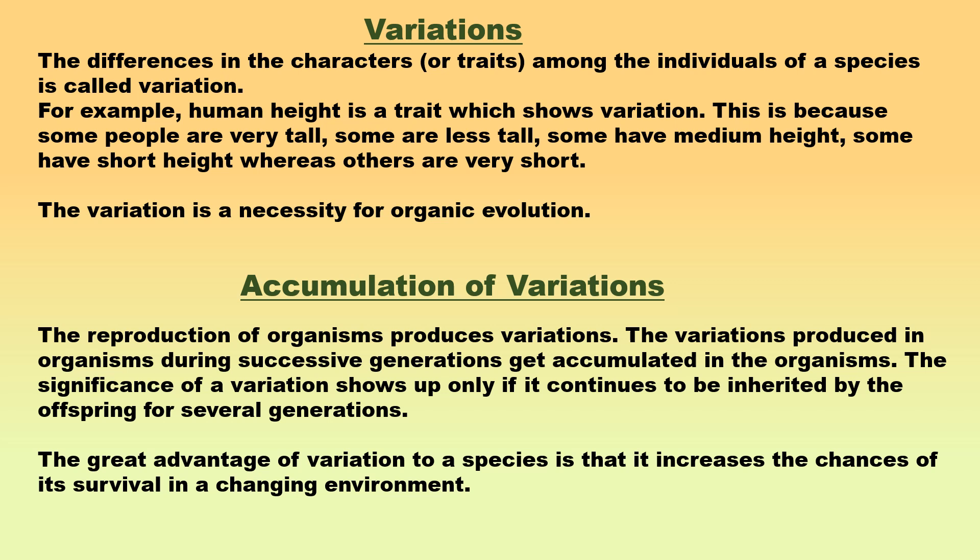Accumulation of variations: The reproduction of organisms produces variations. The variations produced in organisms during successive generations get accumulated in the organisms. The significance of a variation shows up only if it continues to be inherited by the offspring for several generations.